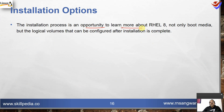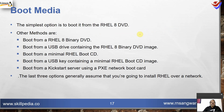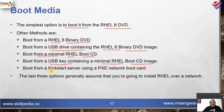The installation process is an opportunity to learn more about RHEL 8 — not only boot media, but also logical volumes that can be configured after installation is complete. Boot media options include: booting from the RHEL 8 binary DVD, booting from a USB drive containing the RHEL binary DVD image, booting from a minimal RHEL boot CD, booting from a USB key with a minimal RHEL boot CD image, or booting from a kickstart service server using a PXE network boot card. The last three options generally assume network-based installation.